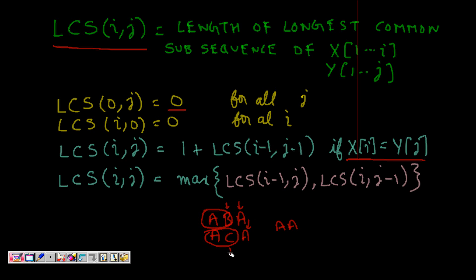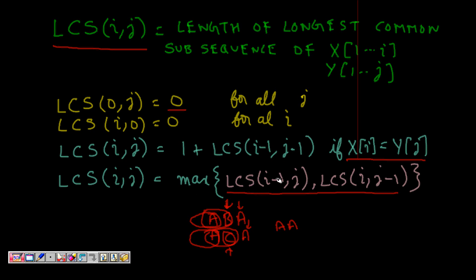If x[i] is not equal to y[j], we cannot form a common subsequence at this pair. So LCS(i, j) = max(LCS(i-1, j), LCS(i, j-1)). We either skip x[i] and search in the left part of x, or skip y[j] and search in the left part of y. This recursive equation captures the optimal substructure, and the overlapping subproblems arise because many sub-cases repeat.